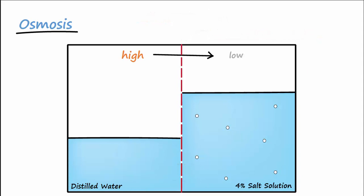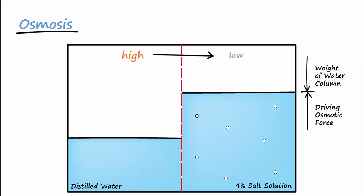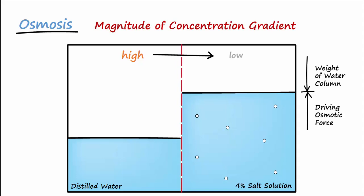The water column will rise until the driving osmotic force is equal to that of the weight of the water column in the opposite direction, pulling the water down. The degree to which the water rises is determined by the magnitude of the concentration gradient. You can't make the high any higher, since you can't concentrate water any more than distilled water. But you could make the low lower by concentrating the salt in the salt solution to decrease the concentration of water. If the salt solution was changed to a 10% solution, you would be changing the magnitude of the concentration gradient, and you would now have a greater force for water to enter the column, driving the column of water to yet a higher level.